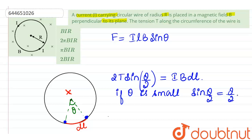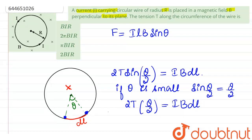So on simplification, we will be getting 2T times theta by 2 equals I B DL. Now they are asking us to find out T value. So if I am calculating T value,